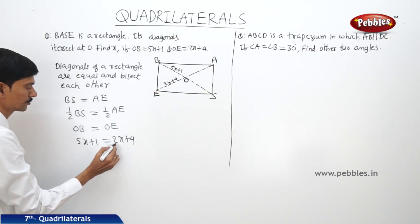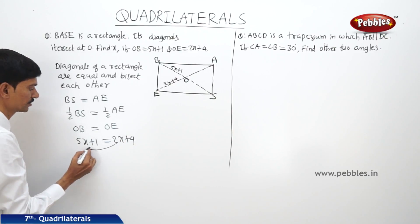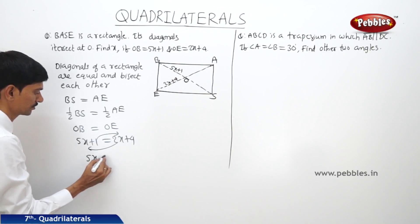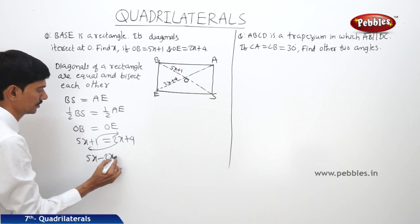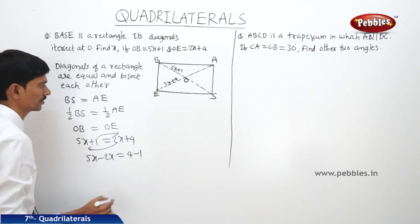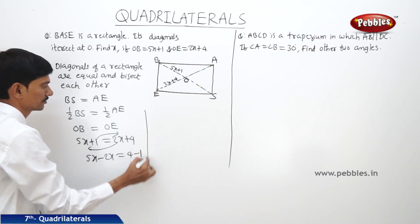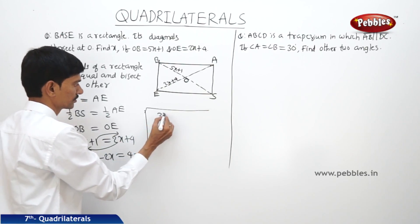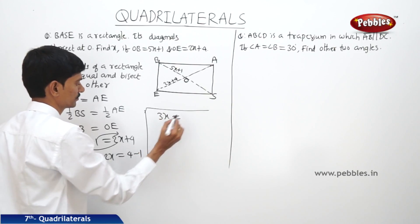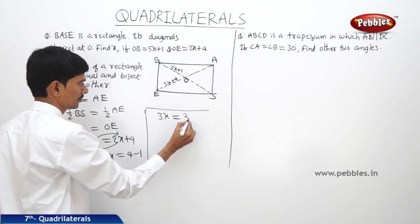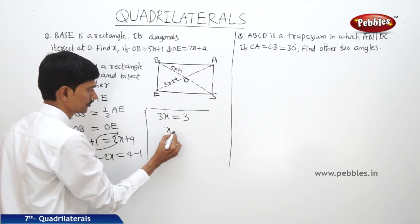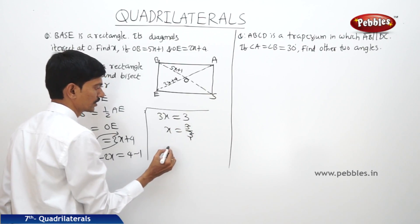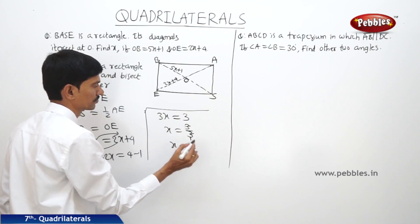By transposing 2x to the LHS and plus 1 to the RHS, we get 5x minus 2x equals 4 minus 1, so 3x equals 3. Then x equals 3 divided by 3, so x equals 1.